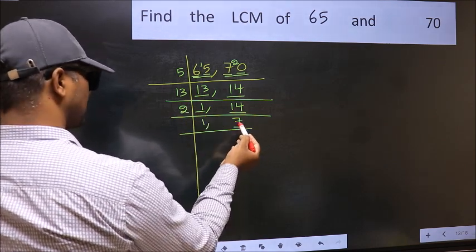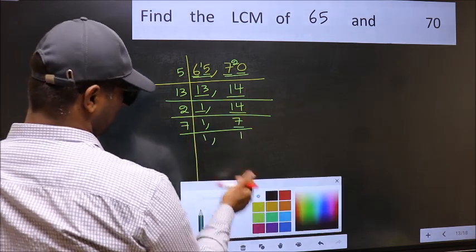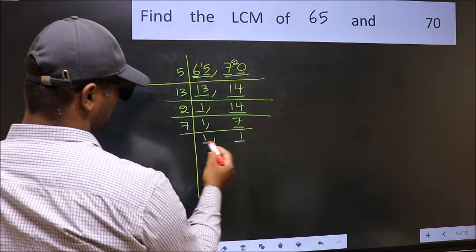Now here we have 7. 7 is a prime number, so 7 once 7. So we got 1 in both places.